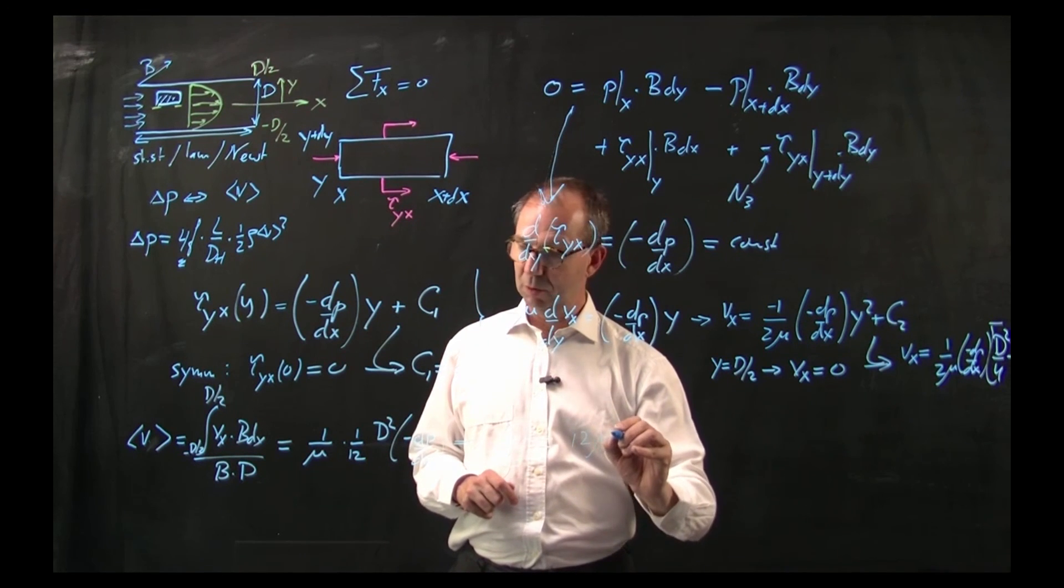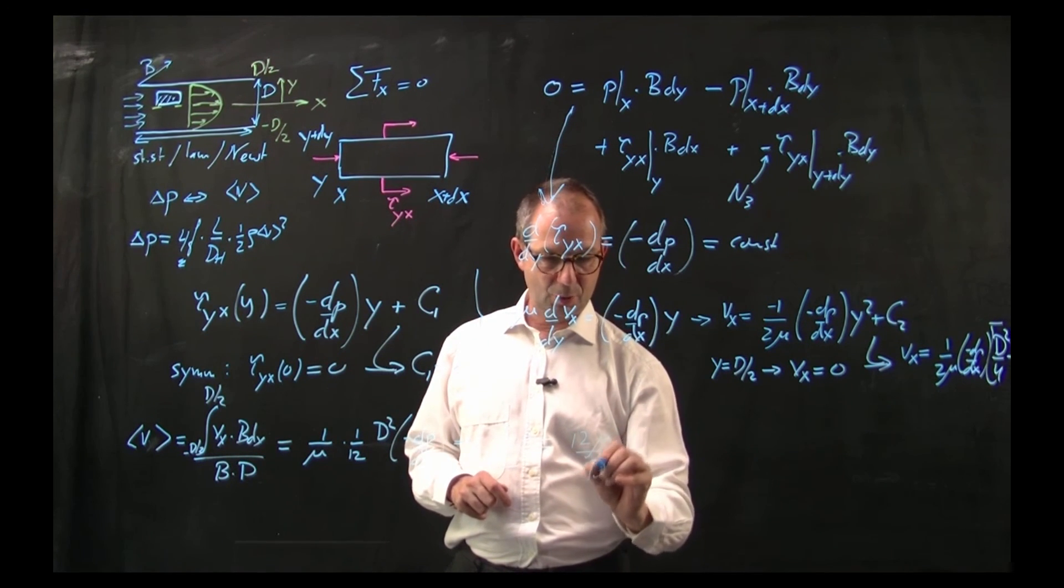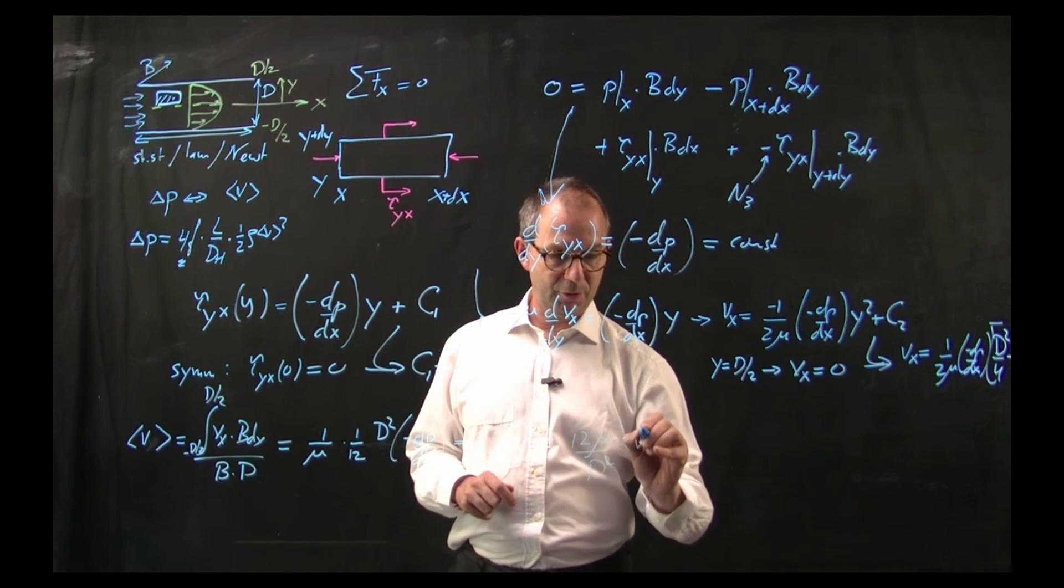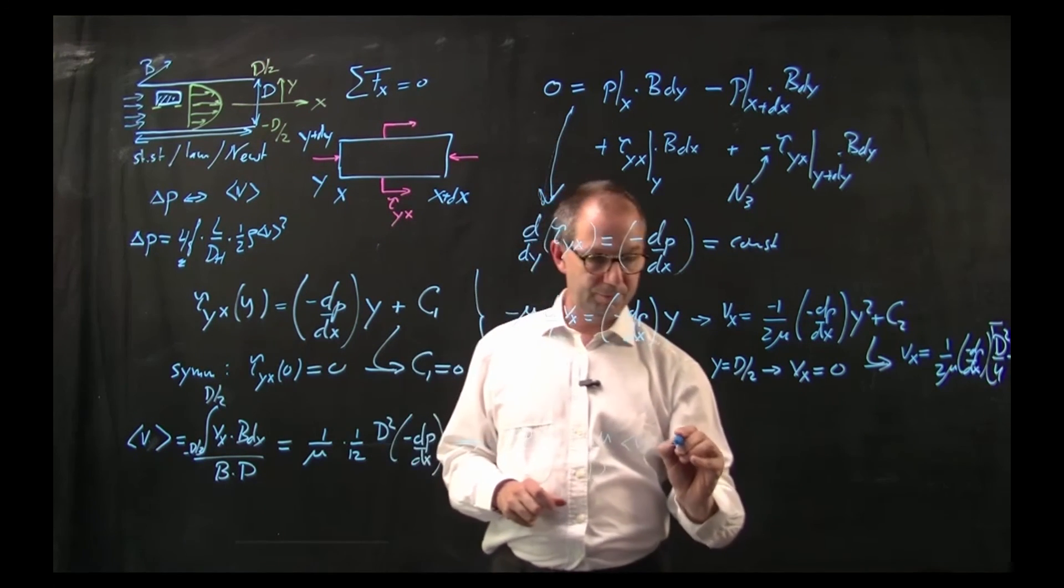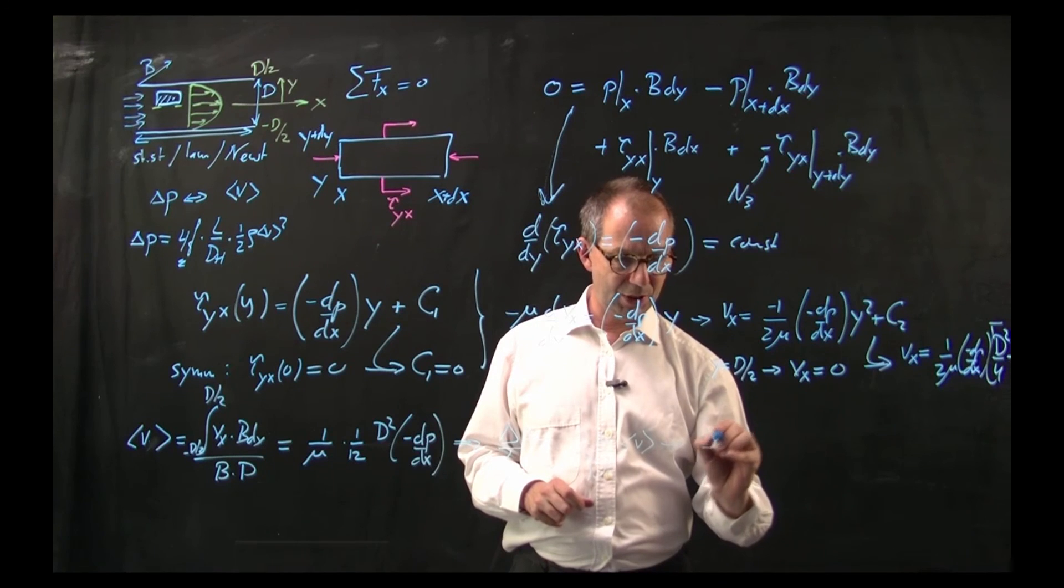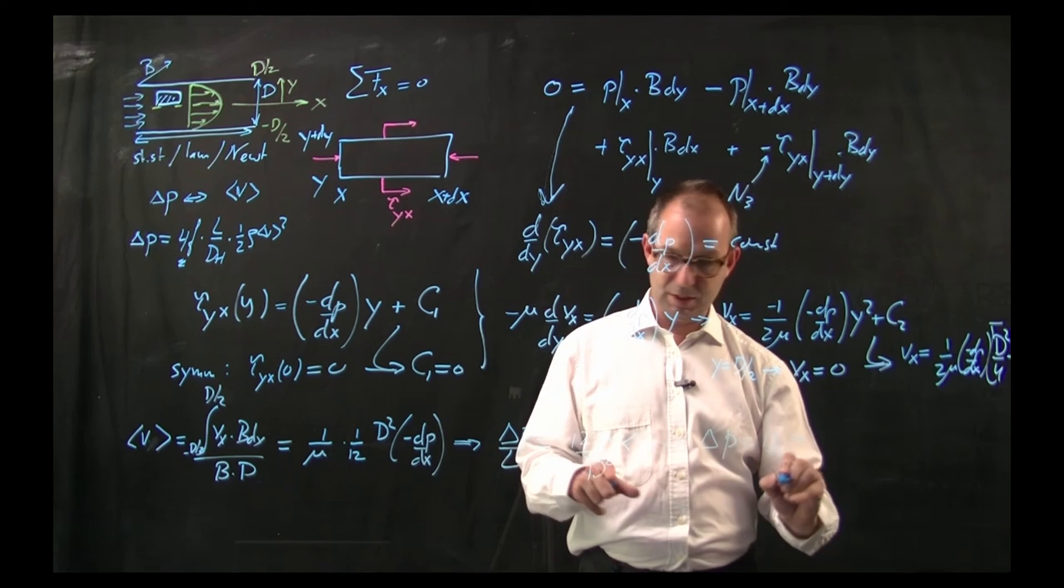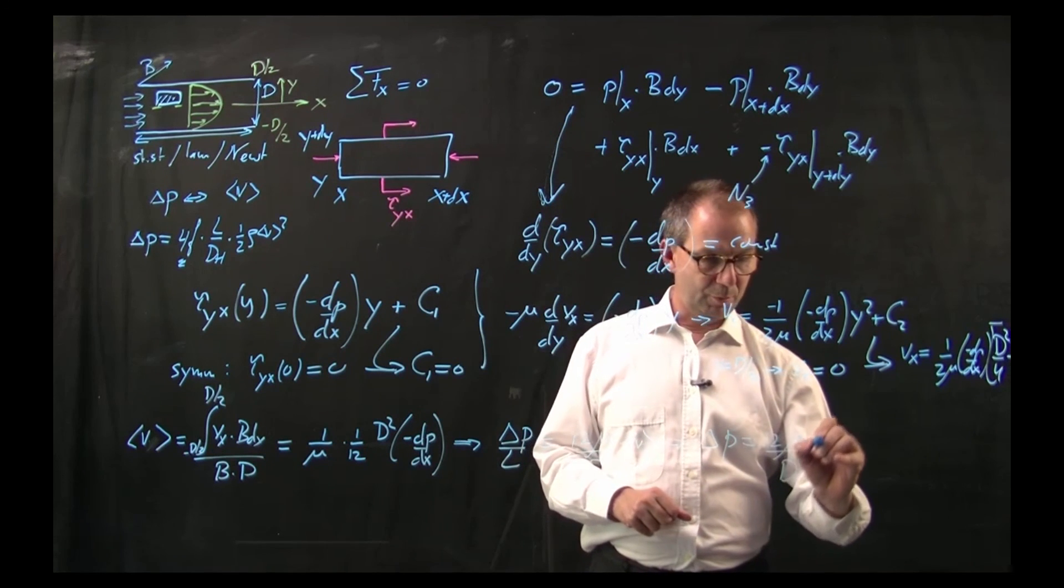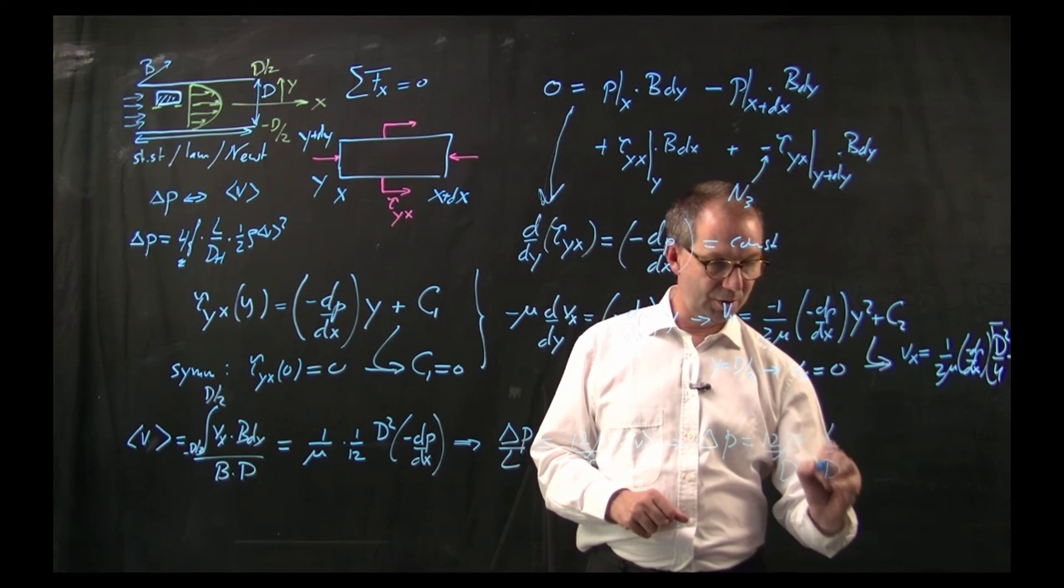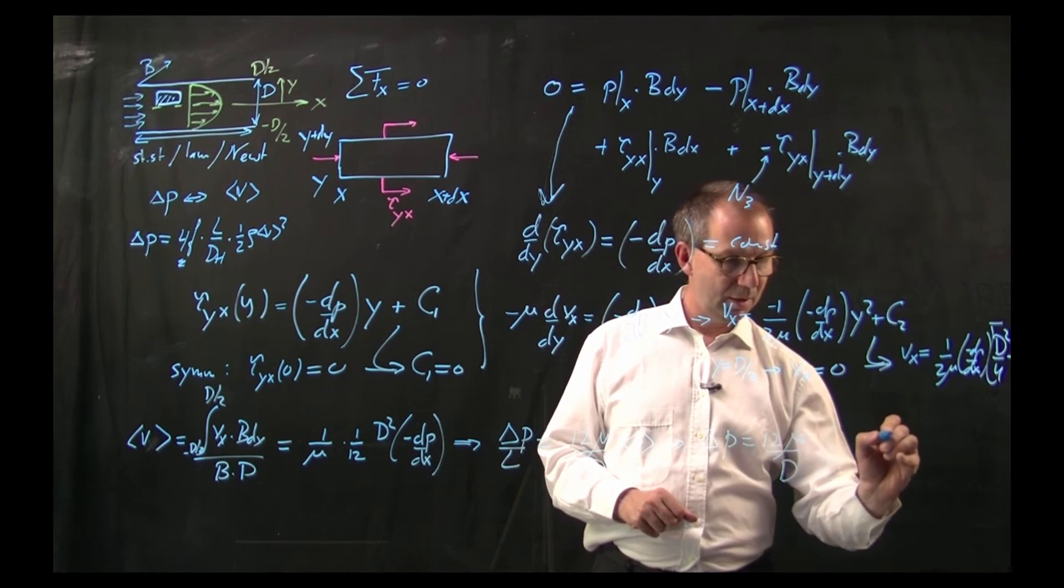I can turn this into a relation for delta p. As minus dp/dx equals delta p over L, I can drop the minus sign and scoop it up in the delta p definition: 12 mu over d squared times the average velocity. Or delta p itself is 12 mu over d.